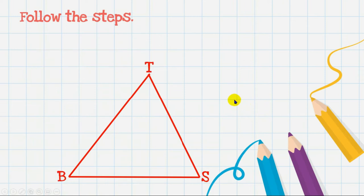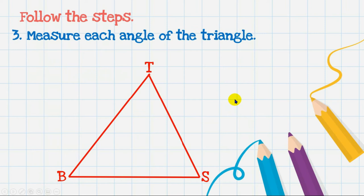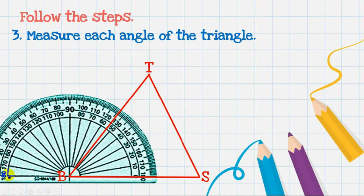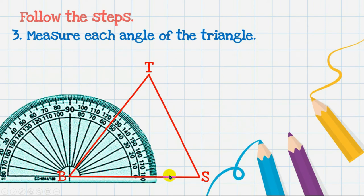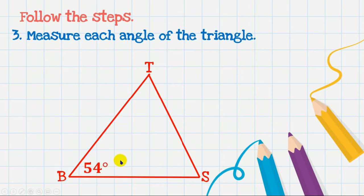After you draw the triangle, get your protractor and measure each angle. Place the zero of the protractor along one side of the triangle — that will be the initial side — then find the terminal side. For angle B, counting from 0 to 54 degrees, the measurement is 54 degrees.